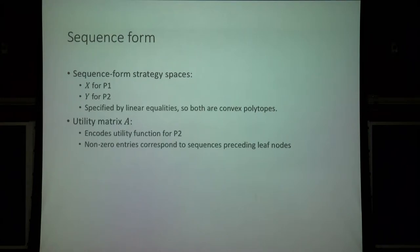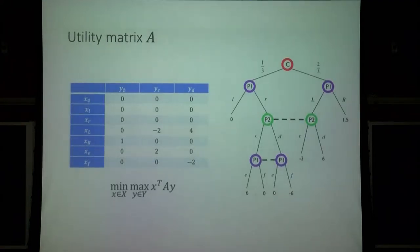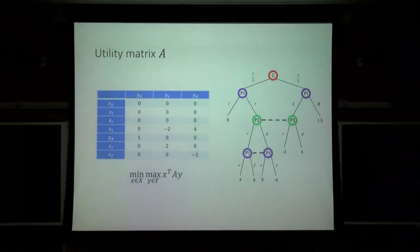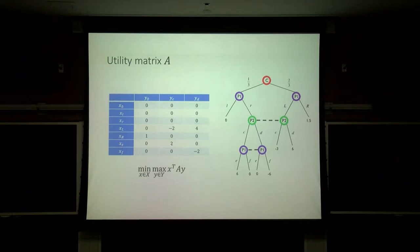The optimization problem is as follows: player one minimizes over their set of sequence form strategies, player two maximizes over their set, and the objective is X-transpose A Y. Here's an example of what the utility matrix looks like for the same example game. The number of rows equals the number of sequences for player one plus the empty sequence, and similarly the number of columns equals the number of sequences for player two. Each entry corresponds to a leaf node — for example, one leaf has last sequence E for player one and C for player two — and we write in the utility times the probability that chance has of reaching it.